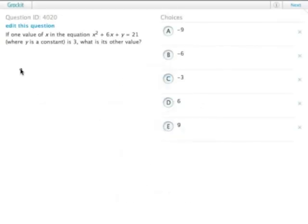So one value of x in this equation is 3, what is the other value? But we have this pesky y constant in here too, a y variable that's a constant. You can have a variable that's a constant.